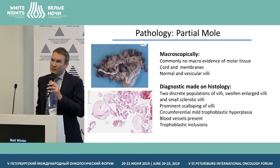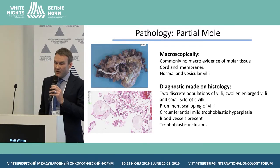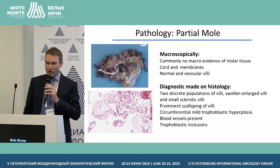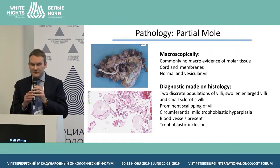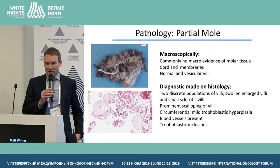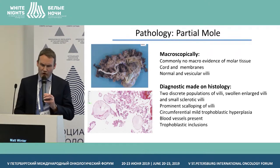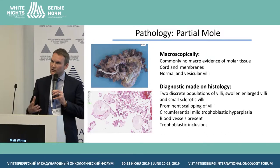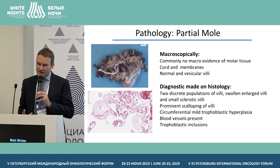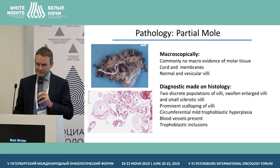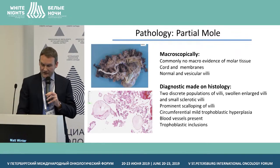In terms of macroscopic appearance of a partial mole, there commonly may be no macroscopic evidence of molar tissue — perhaps mixed discordant membranes with normal-appearing villi. On histology, there are two discrete populations of villi: enlarged swollen villi and more small sclerotic ones. You get this prominent scalloping, visible on the left-hand side, and circumferential focal mild trophoblastic hyperplasia — very different to the hyperplasia seen in a complete mole. You'd also see trophoblastic inclusions and blood vessels are present, which can sometimes make the distinction from a complete mole harder to see.